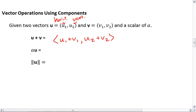Here's what happens when you do a scalar times a vector u. This will equal a times u1, and then a times u2.